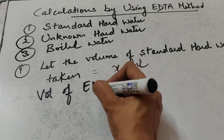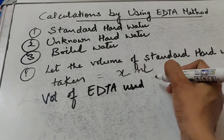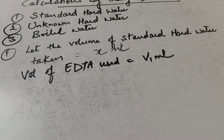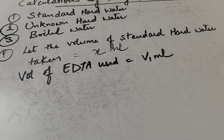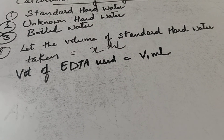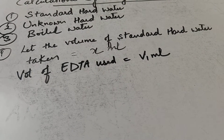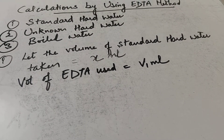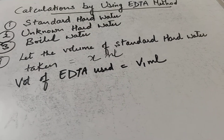The volume of EDTA used is equal to V1 ml. To neutralize X ml of standard hard water, the EDTA consumed is V1 ml. When you perform the experiment and titrate with standard hard water, the burette reading will be V1.